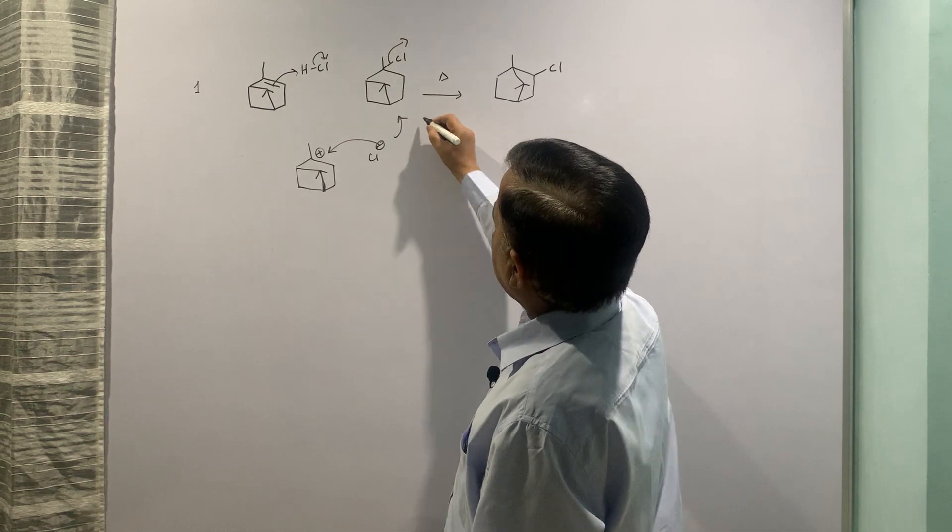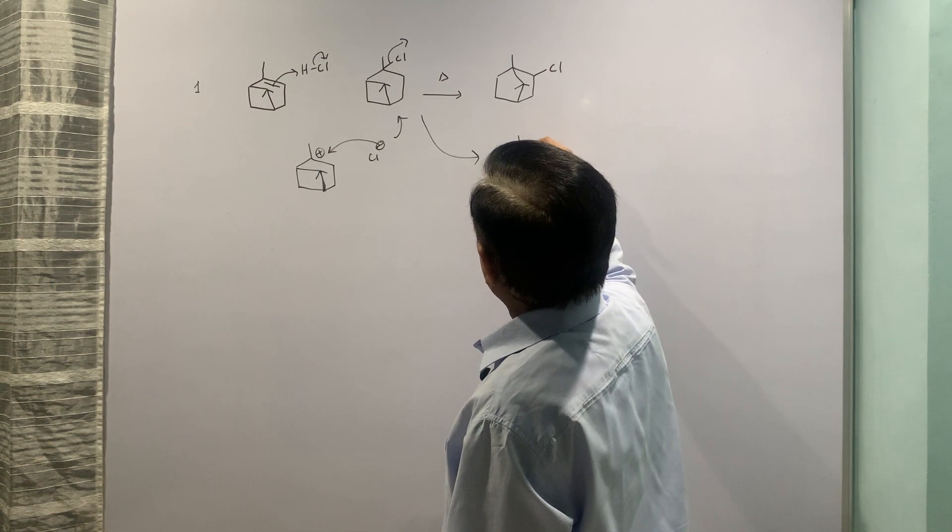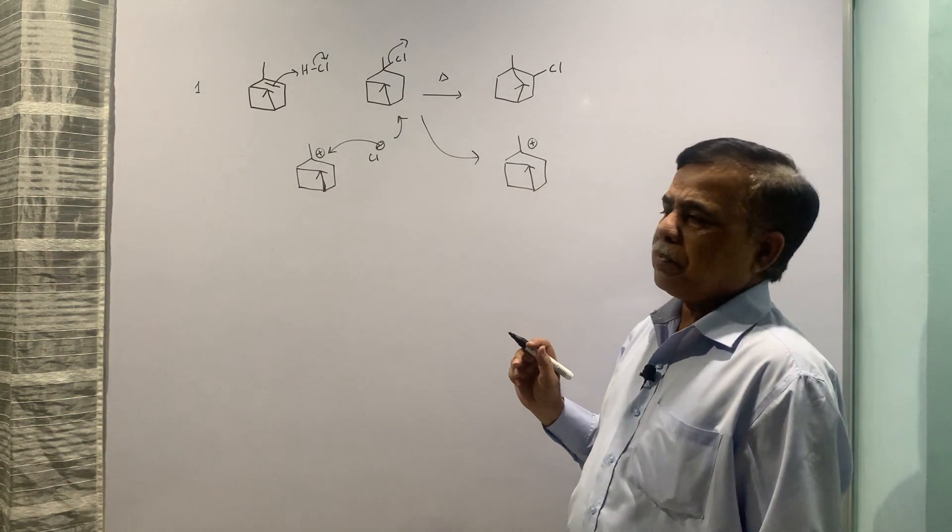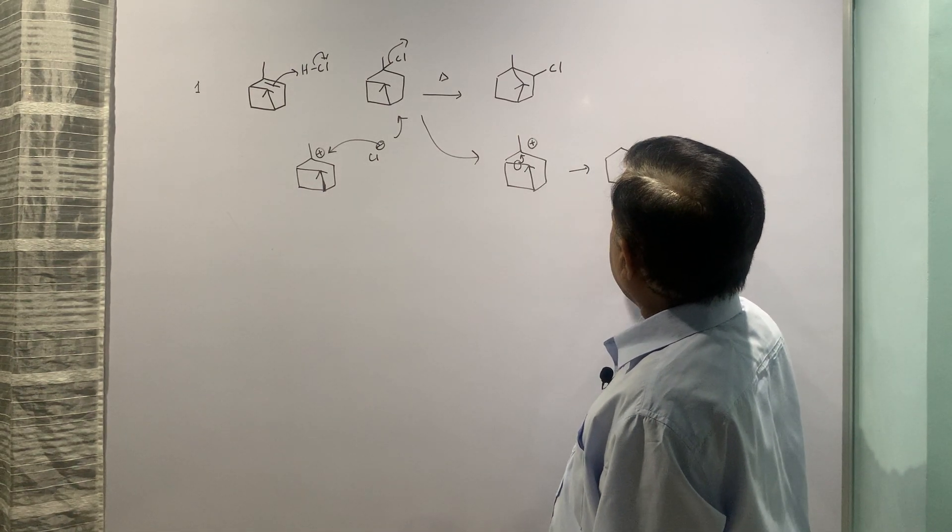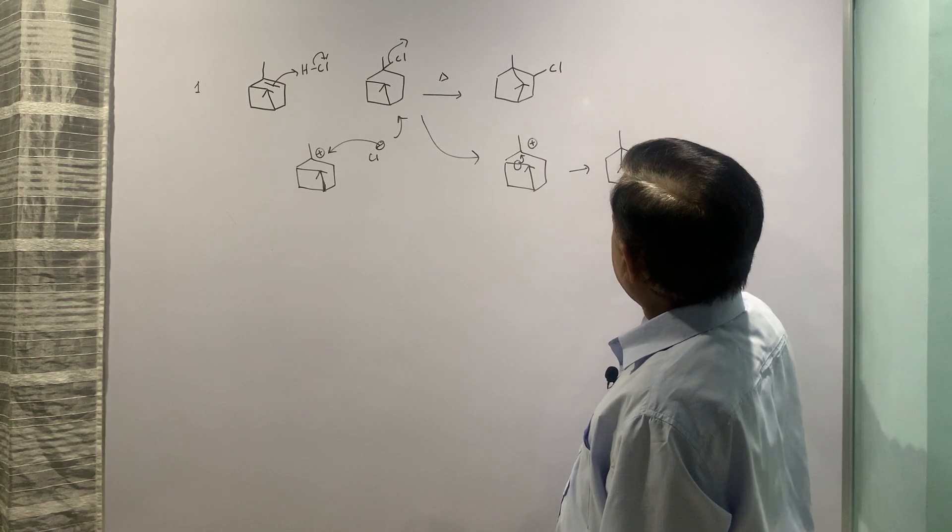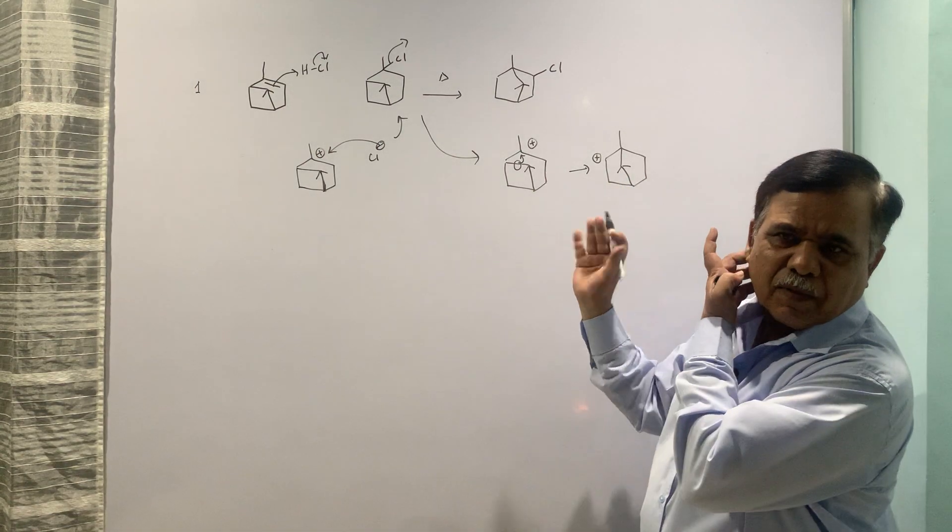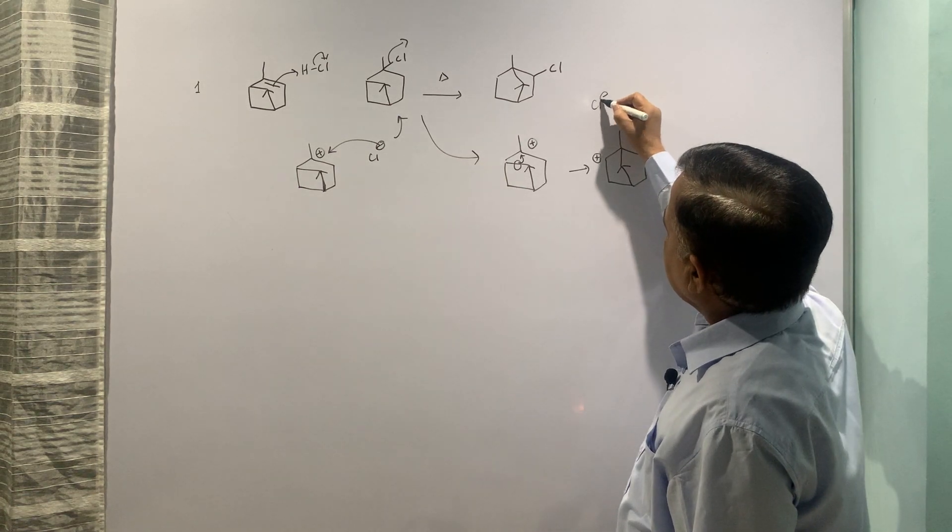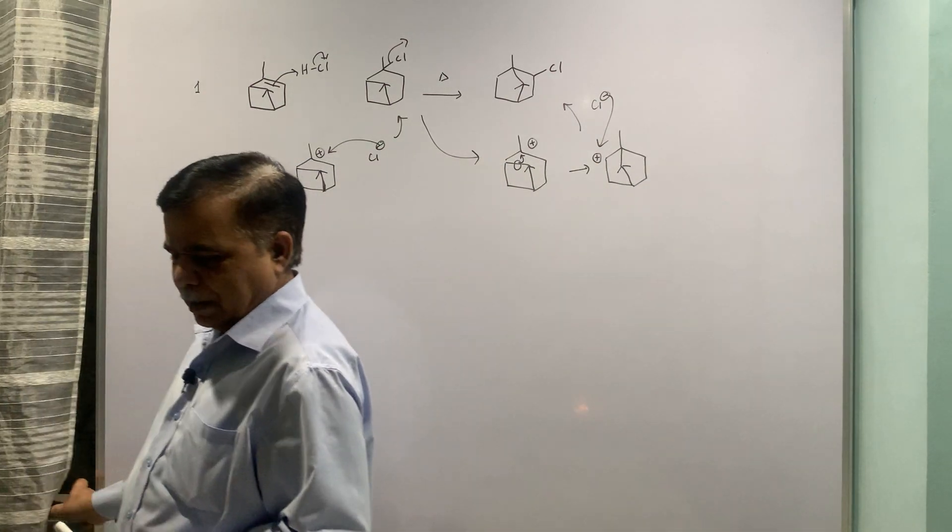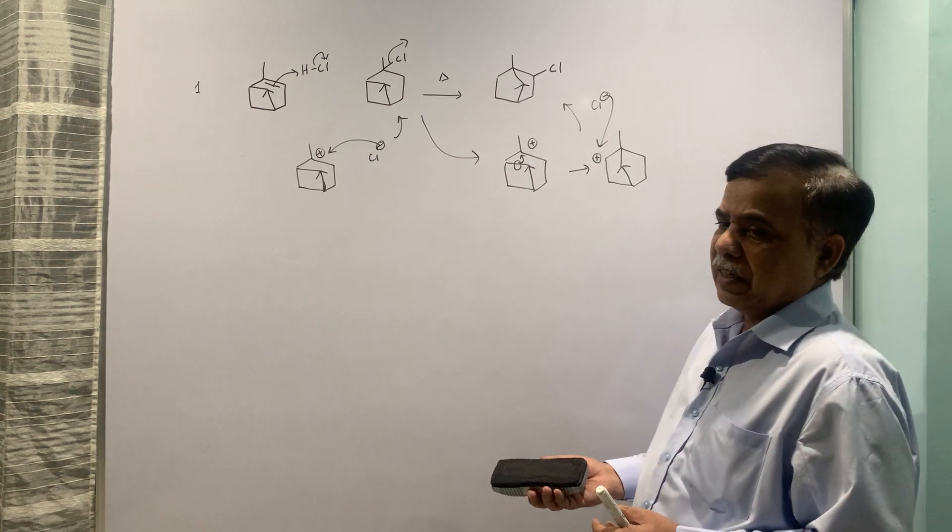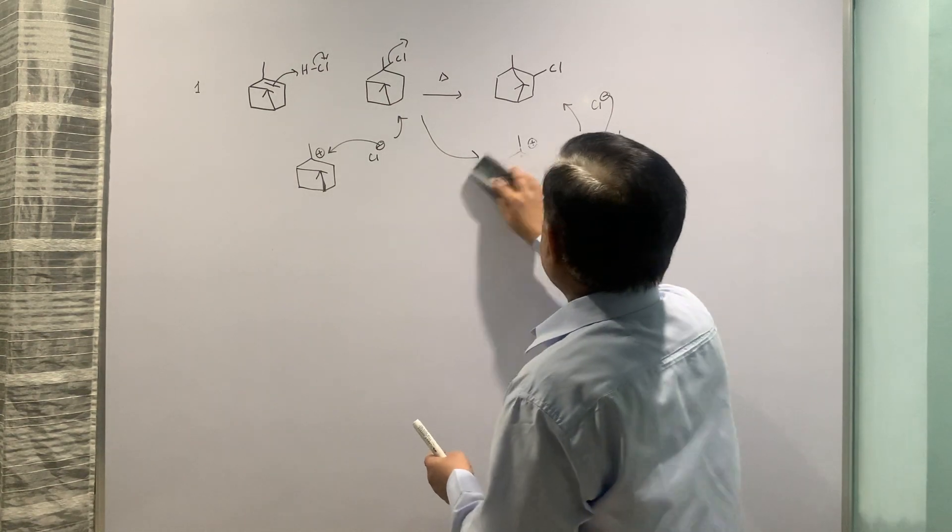This goes off and you will have positive charge here because that is heterolytic cleavage of carbon-chlorine bond. This bond migrates here and subsequently you will have, we can write it on the other side because it is just a flipping of the molecule. Now this Cl- can attack here and you get this compound.